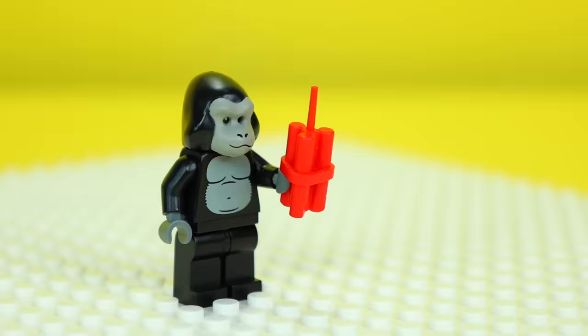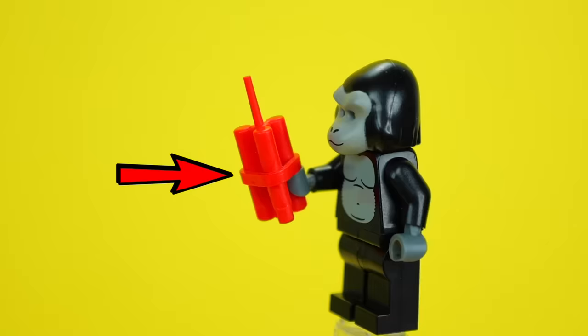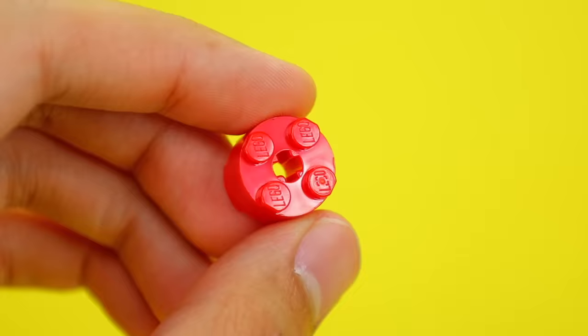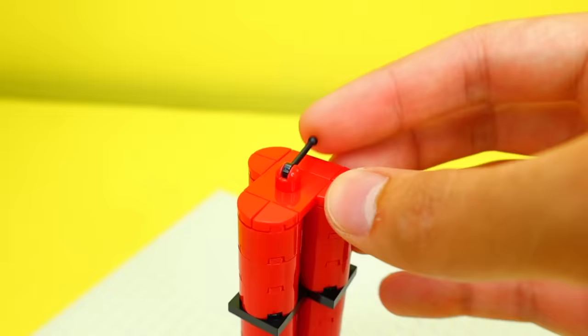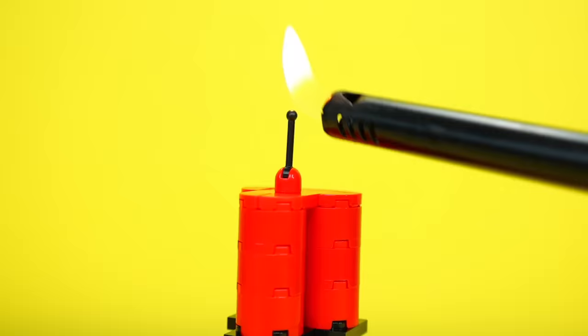What if we tried building a stick of Lego dynamite? Kind of like this one for a minifig. So to build it, I'm gonna use these round red bricks and a tiny antenna piece on top to look like the piece of string you light.